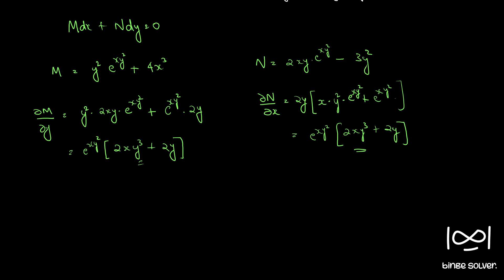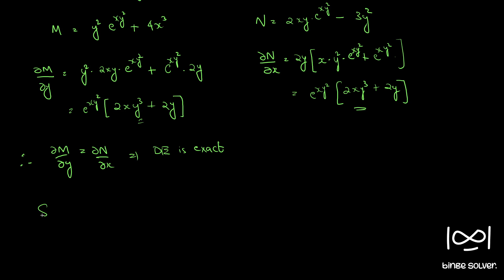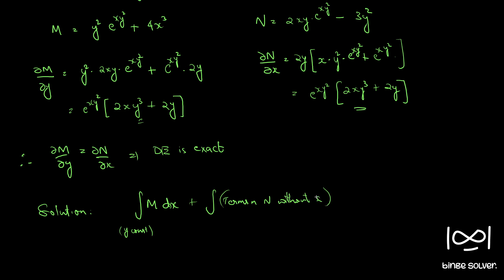As you can see, ∂M/∂y equals ∂N/∂x, which implies the differential equation is exact. Now we find the solution. The solution is: integral of M dx (considering y constant) plus integral of terms in N without x, with respect to dy, equal to c.